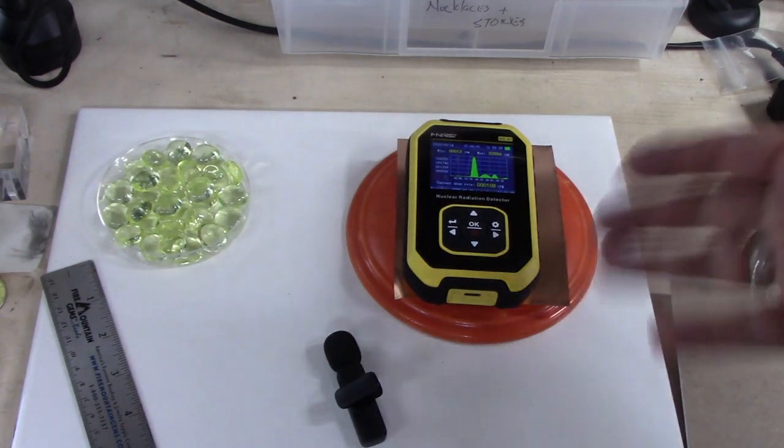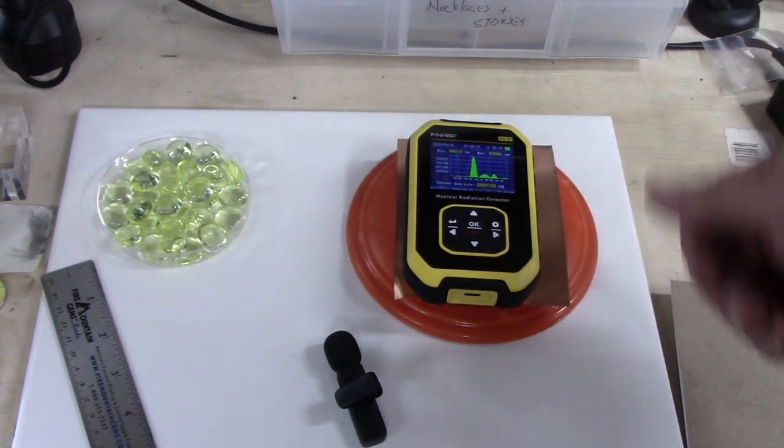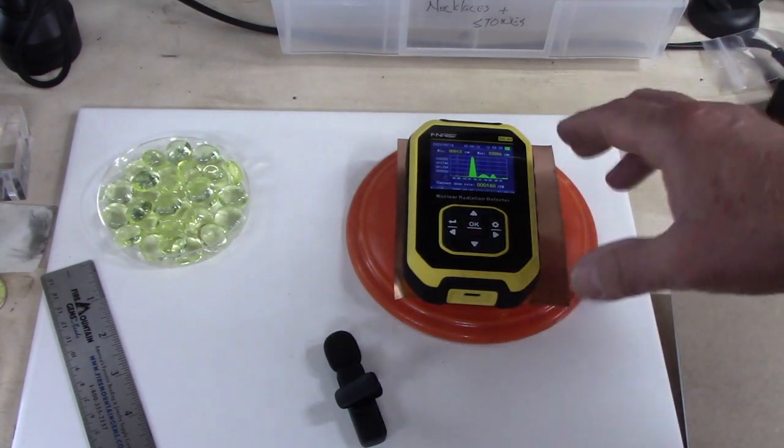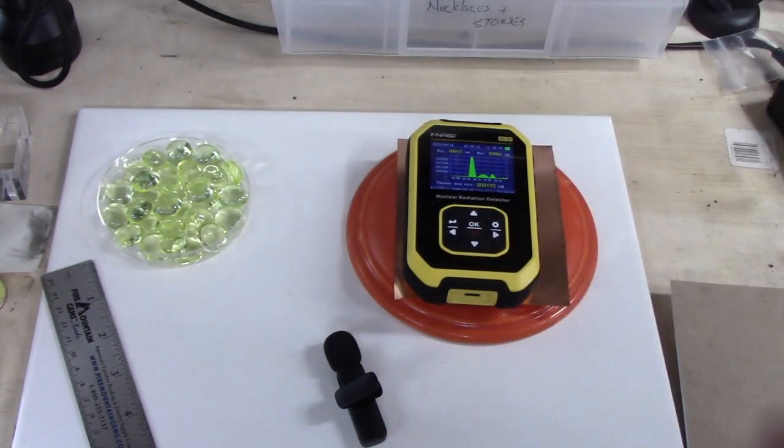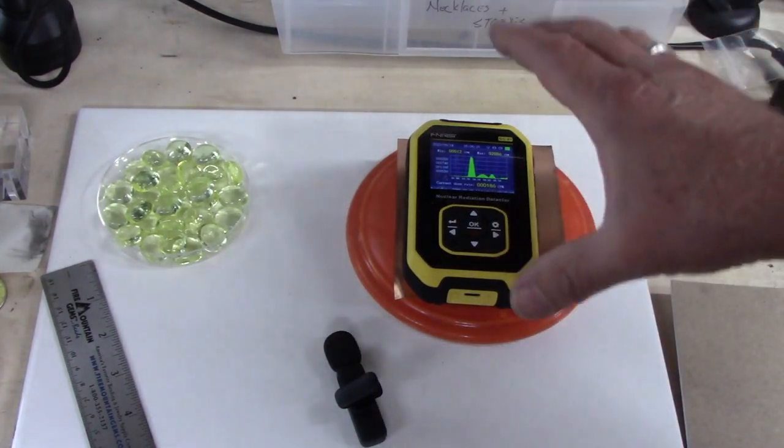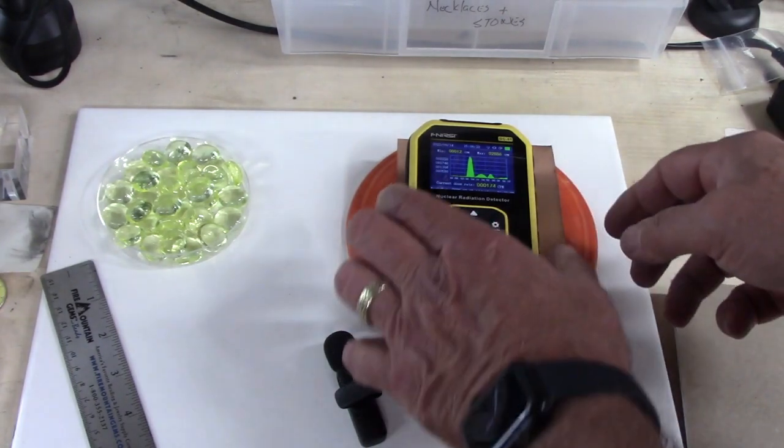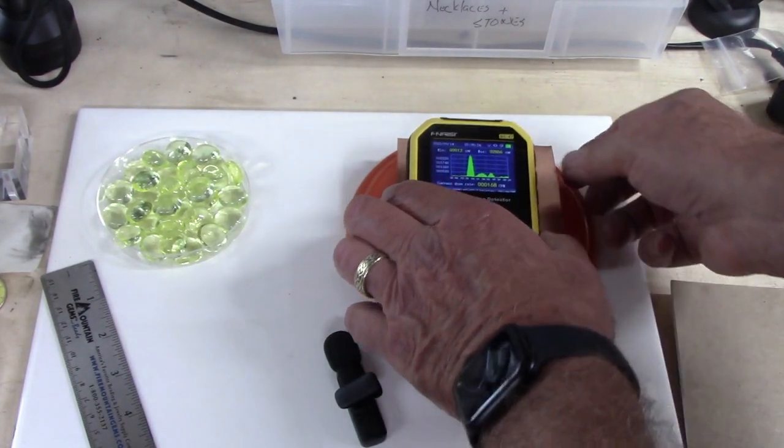So, background was about 60 and we're getting about 150. So, about double background. And that might be traces of gamma. Gamma particles are very high energy photons that can travel a long distance.